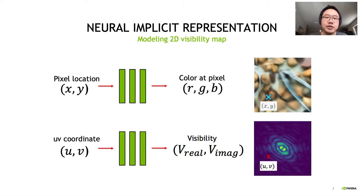As we mentioned earlier, the neural implicit representation can be used to encode a color image. In that case, the input of the network is a pixel location, and the output is a pixel intensity in the 3 color channels. Similarly, in our case, we can use the neural implicit function to represent the complex value UV visibility map.